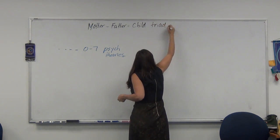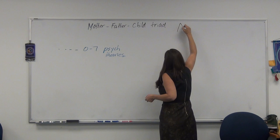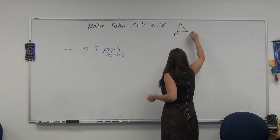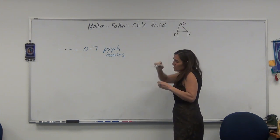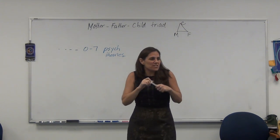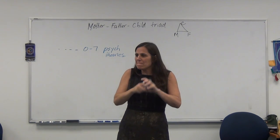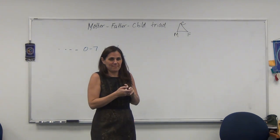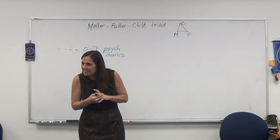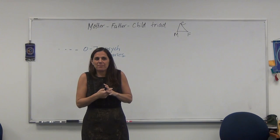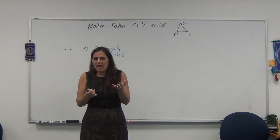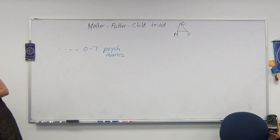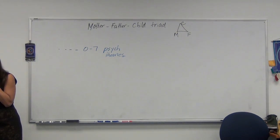So my theory is called the Mother-Father-Child Triad, and I draw a triangle: mother, father, child. Now, what is the first thing a theory must do? You have to have some background — a hypothesis.